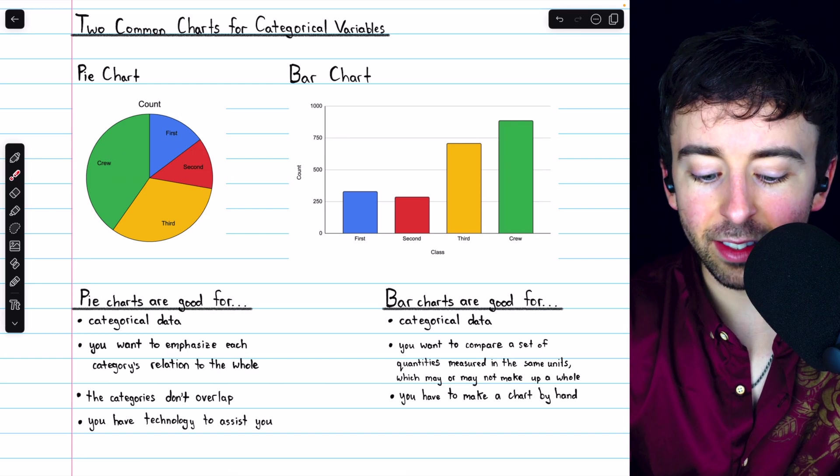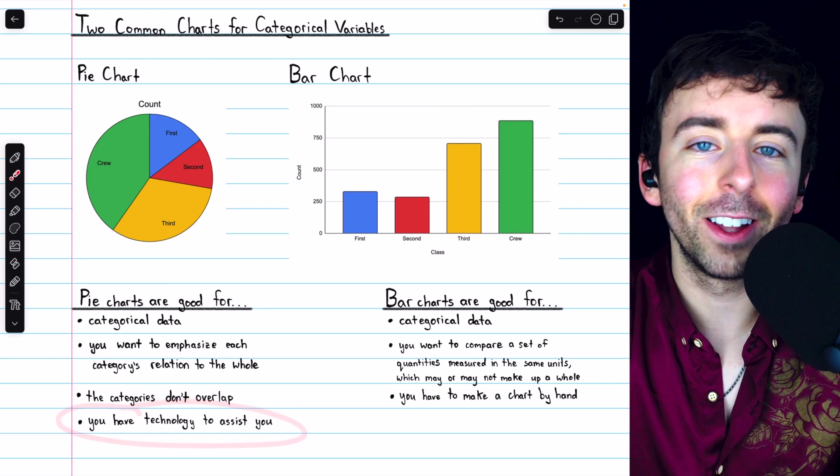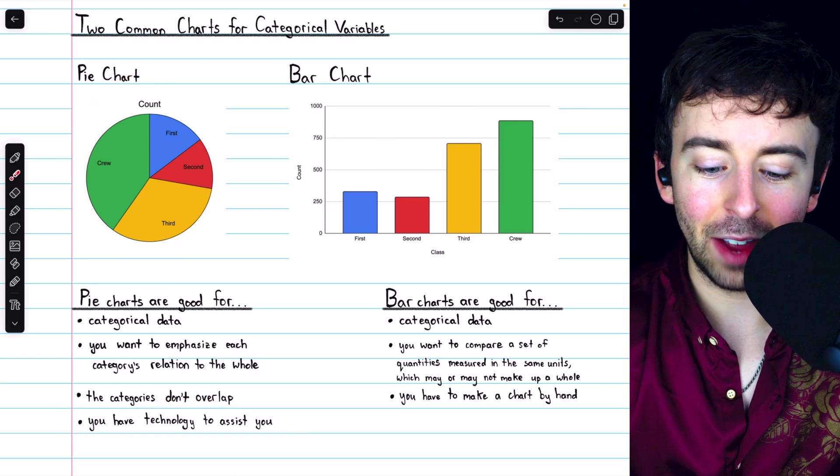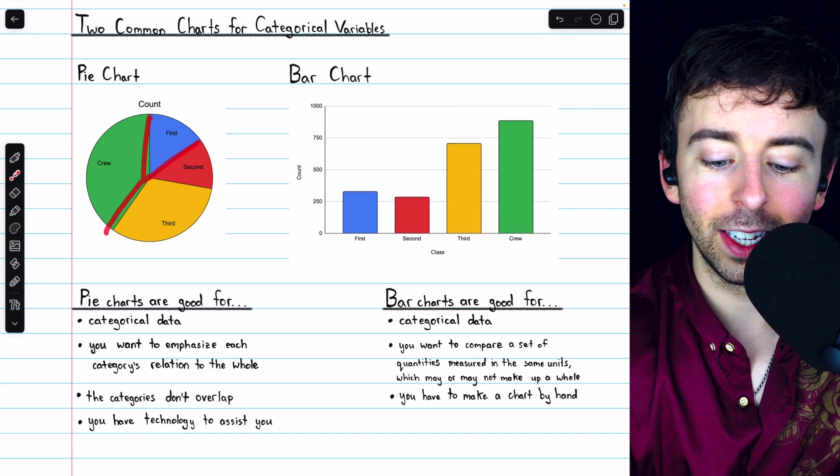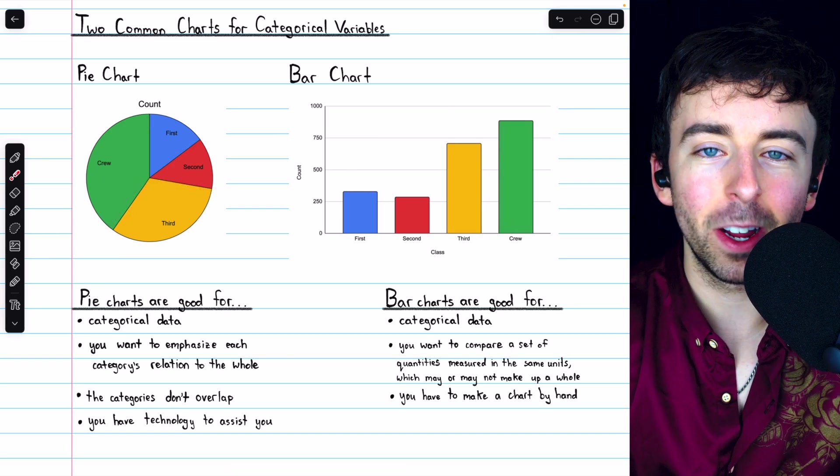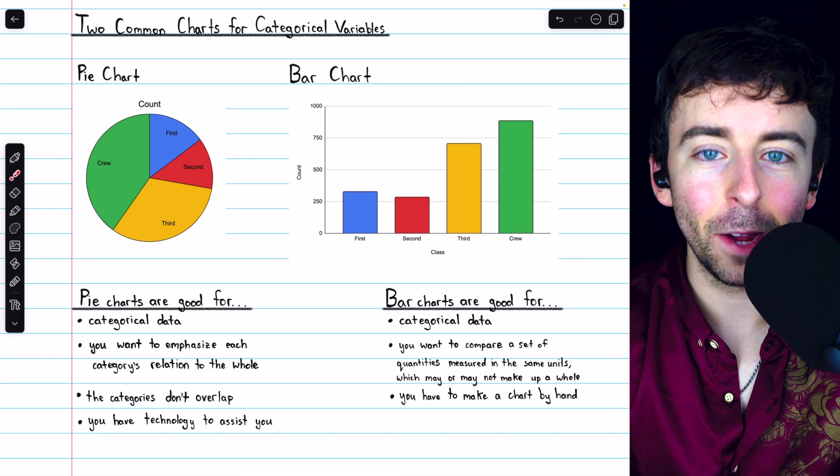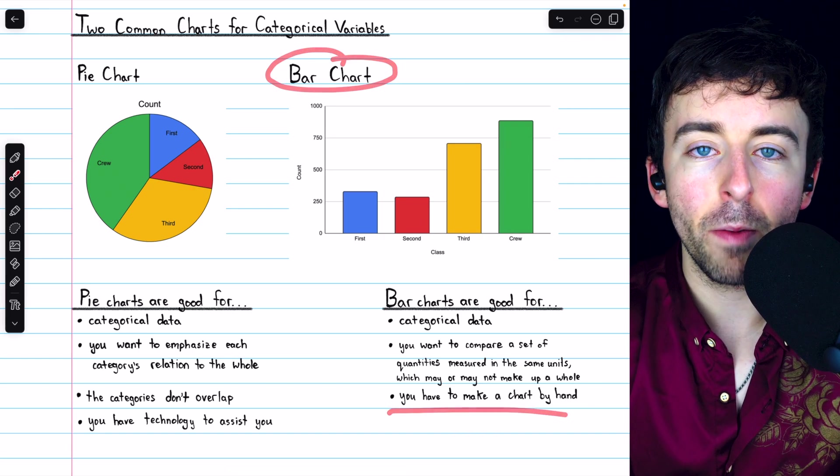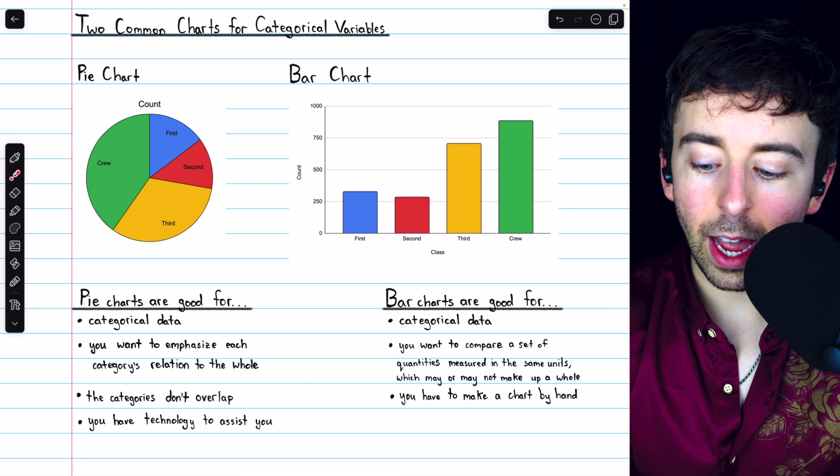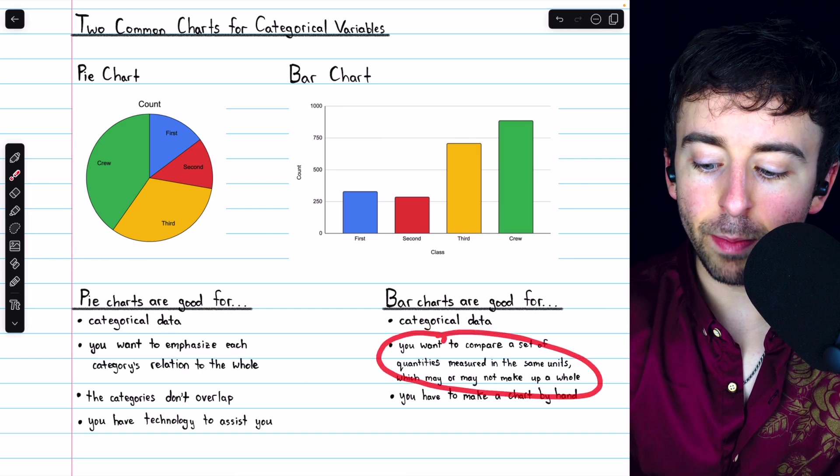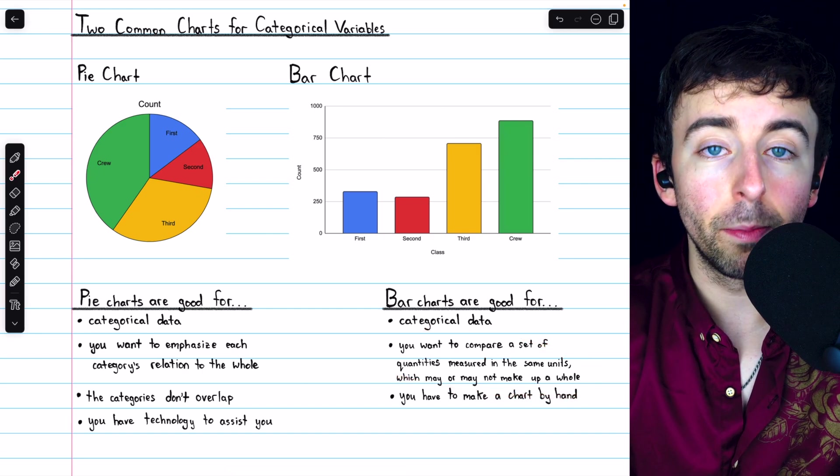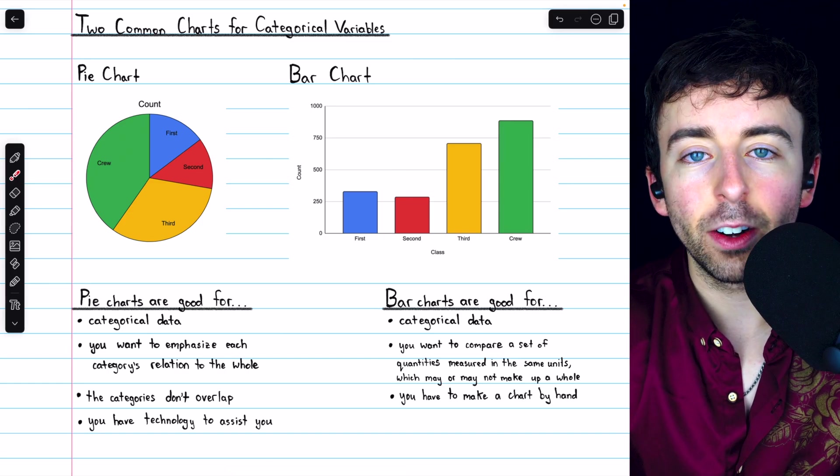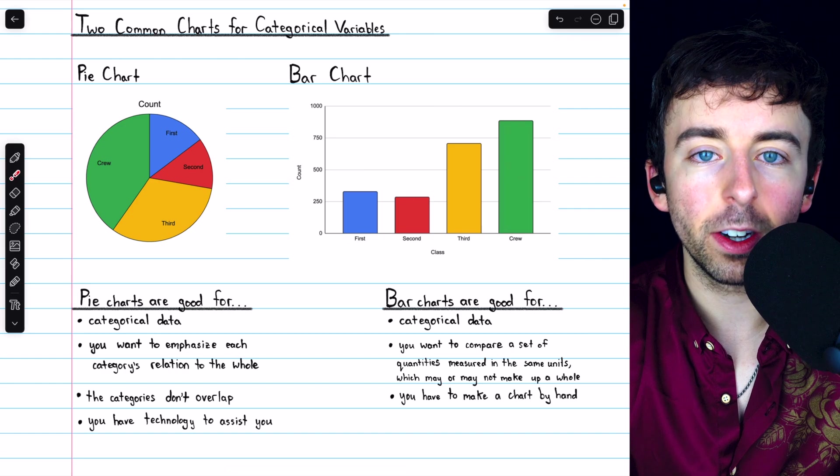So for a pie chart, categories can't have overlap. Also, you're really only going to consider a pie chart if you have technology to assist you. This is not something that's easy to make by hand. You'd have to figure out all the angles to cut the circle into the proper areas and everything. On the other hand, a bar chart is great if you have to make a chart by hand. It's pretty straightforward. And if you want to compare a set of quantities measured in the same units, which may or may not make up a single whole, a bar chart works fine.